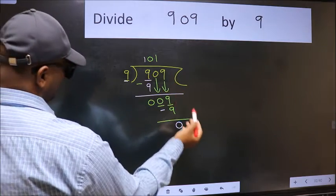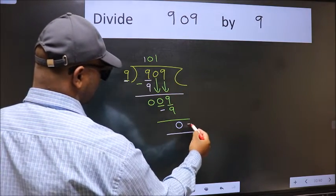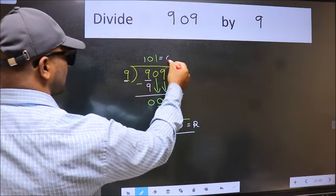No more numbers to bring it down. So we stop here. This is our remainder and this is our quotient.